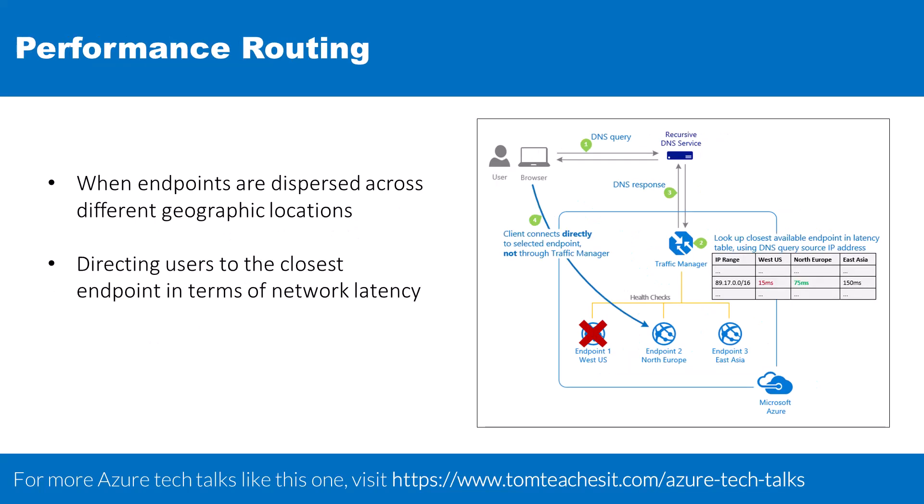The performance routing method comes into play particularly when endpoints are dispersed across different geographic locations. This method prioritizes the user experience by directing users to the closest endpoint in terms of network latency. The result is optimized response times, which is crucial for services requiring quick interactions.